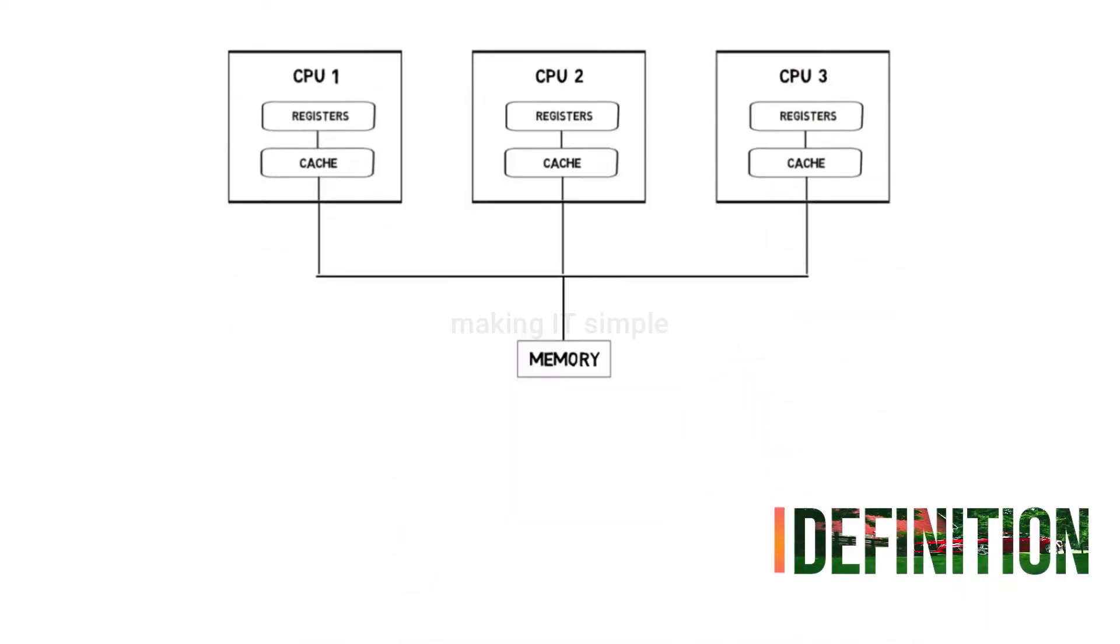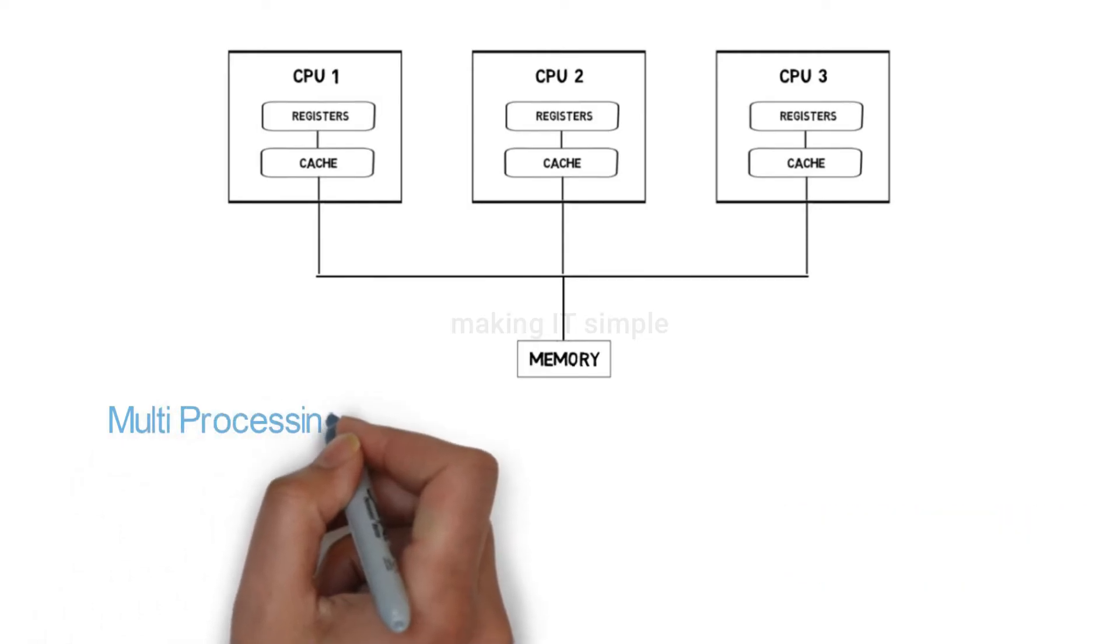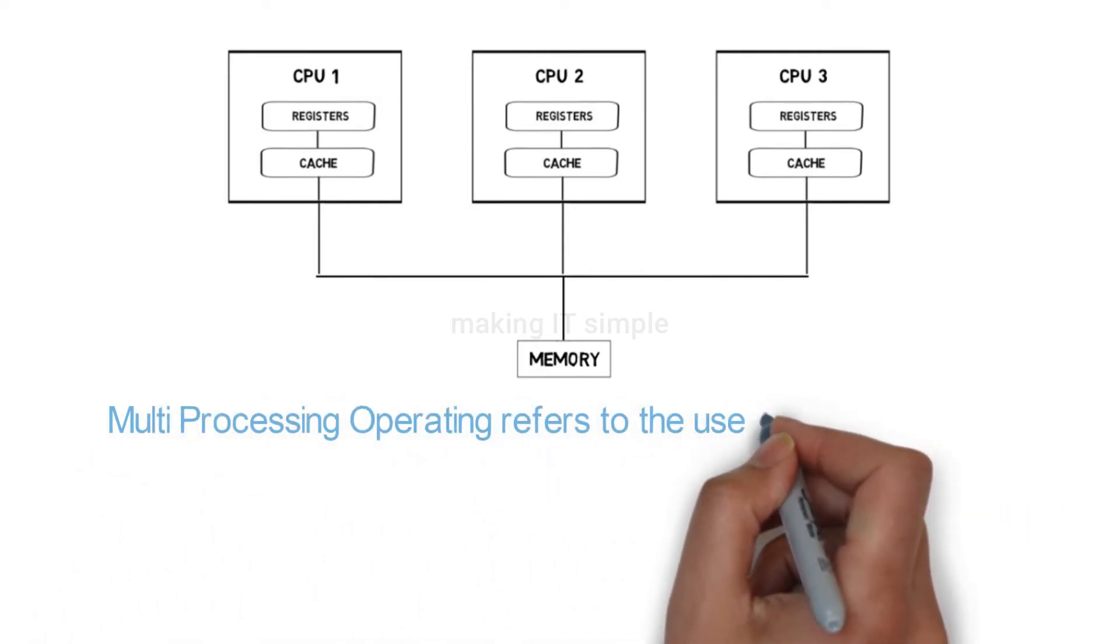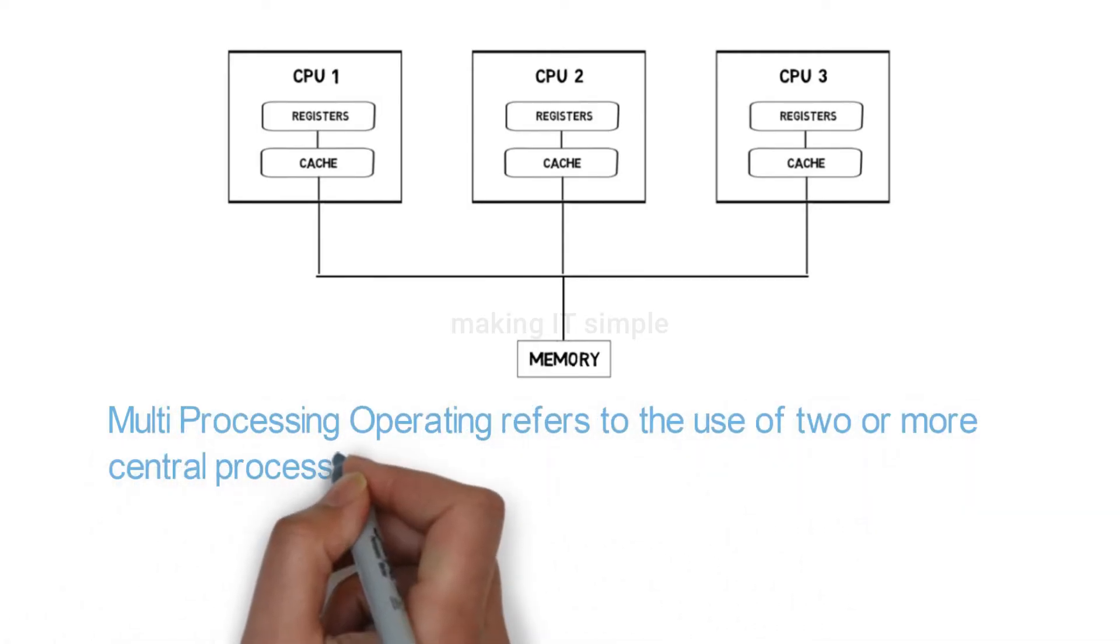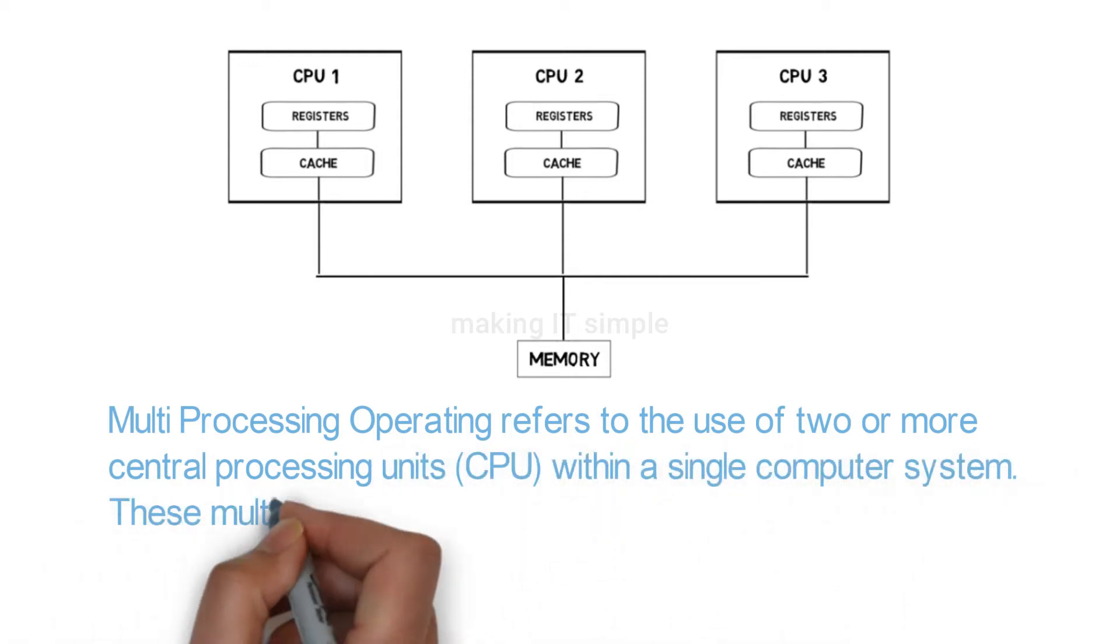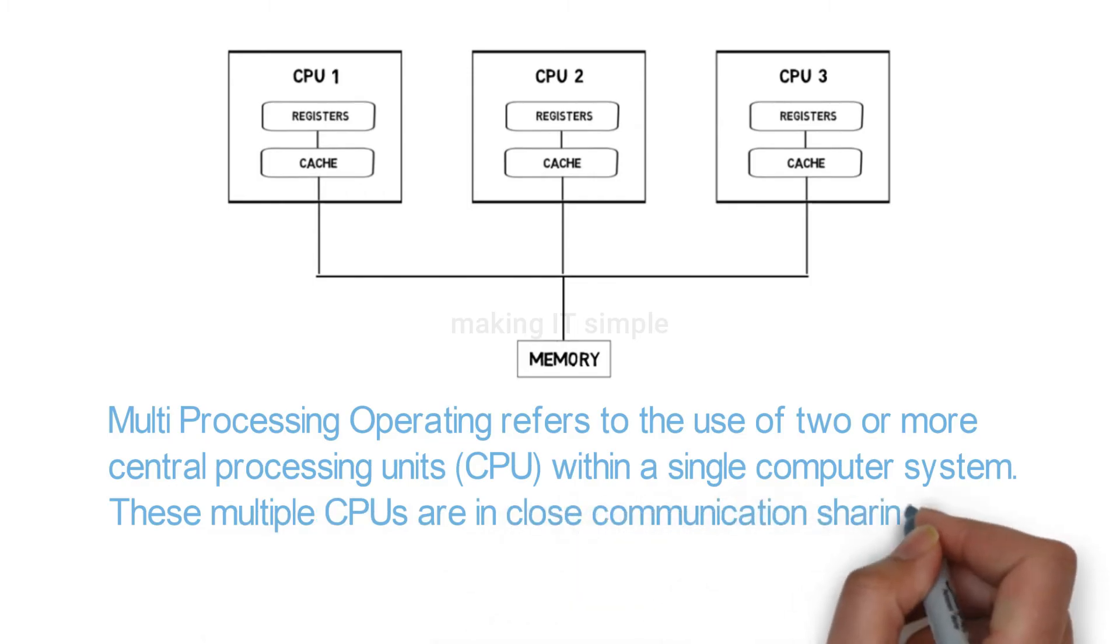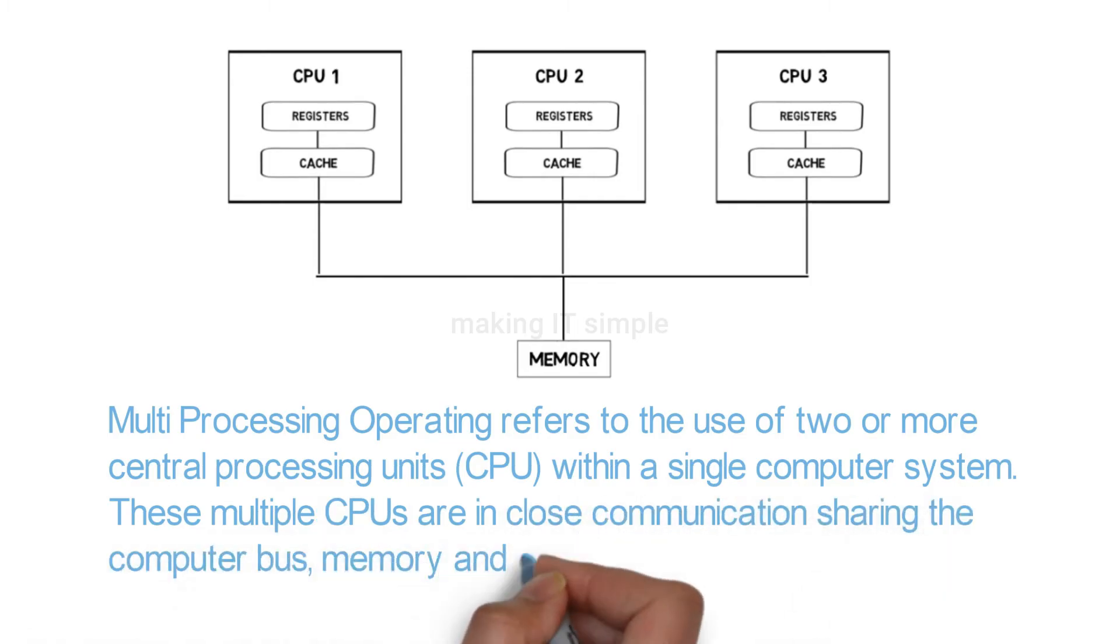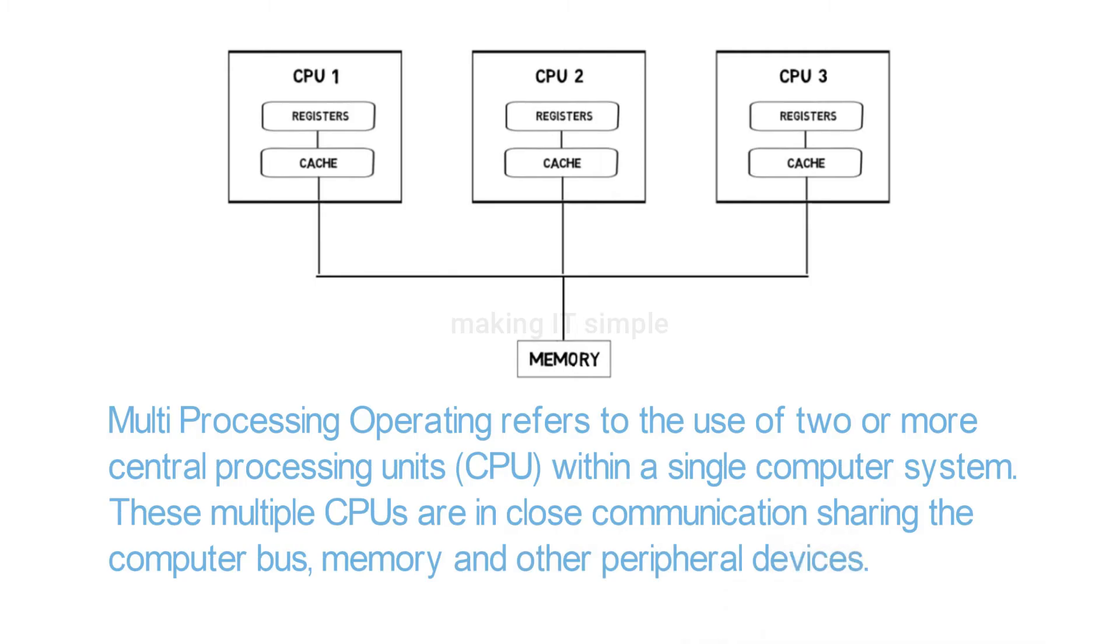Let's start with the definition. Multi-processing operating refers to the use of two or more central processing units, that is CPU, within a single computer system. These multiple CPUs are in close communication sharing the computer bus, memory, and other peripheral devices.